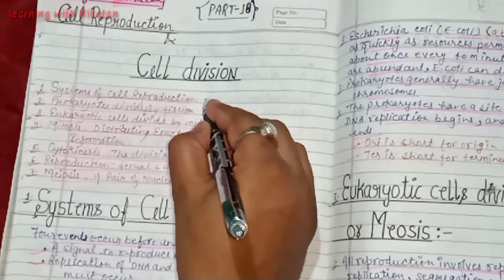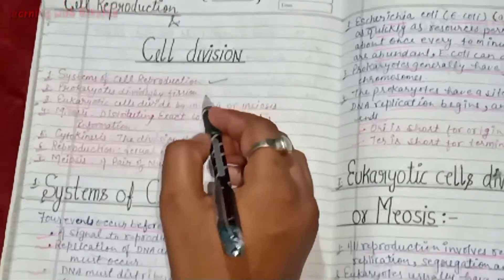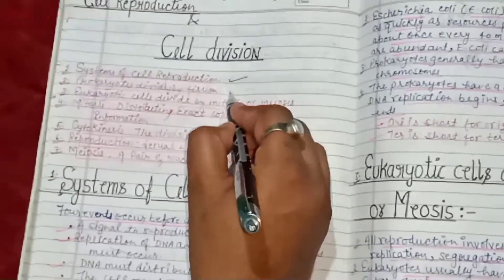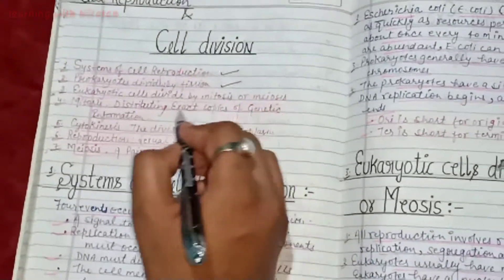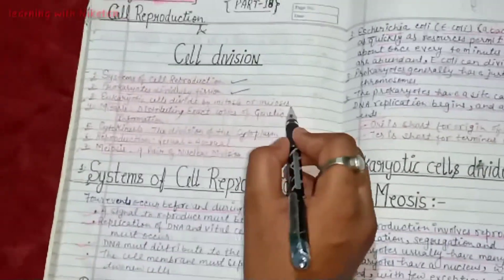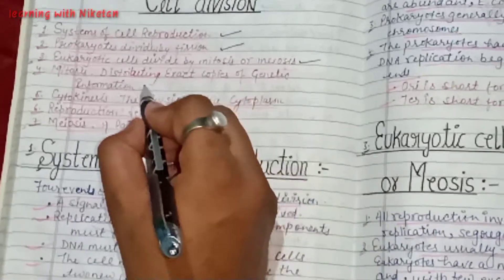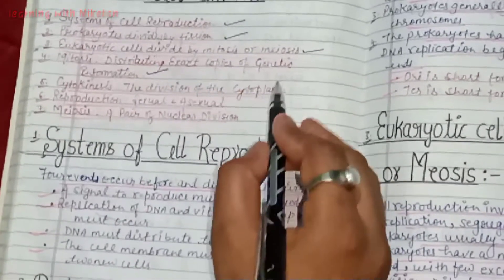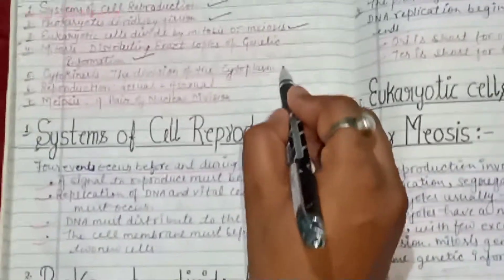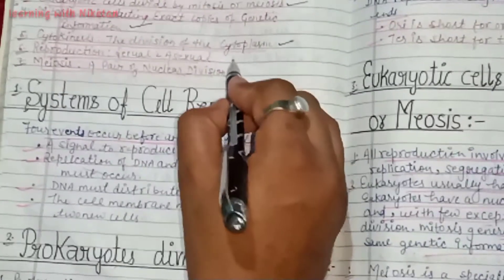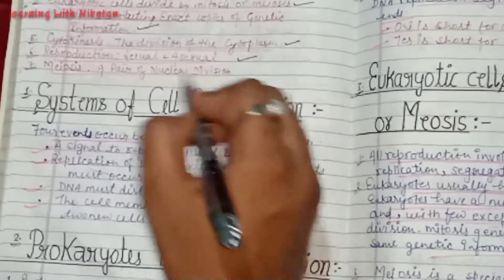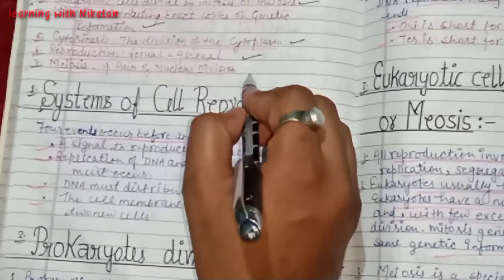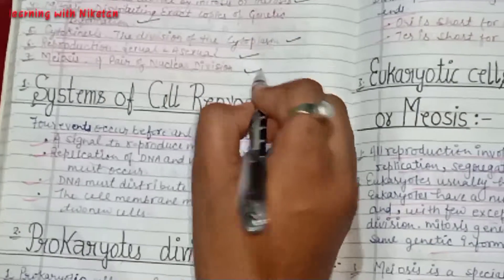First one is system of cell reproduction. Prokaryotes divide by fission. Eukaryotic cells divide by mitosis and meiosis. Mitosis distributes exact copies of genetic information. Cytokinesis is the division of the cytoplasm. Reproduction — sexual and asexual. Meiosis is a pair of nucleus division.